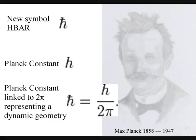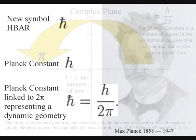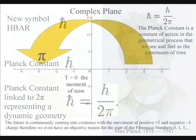If we start at the smallest scale, with the Planck constant, we find it is very often linked to 2pi. This happens so often in quantum mechanics that a new mathematical symbol was created, called h-bar, to represent the Planck constant divided by 2pi. In this video, instead of making new mathematical symbols, we are going to explain a geometrical process that the maths is based upon.